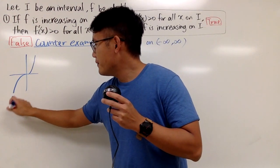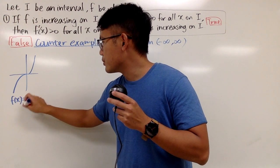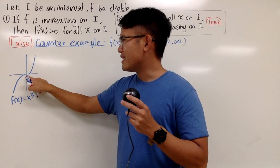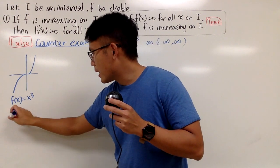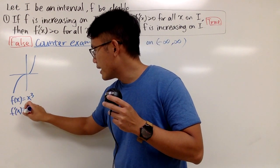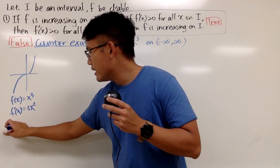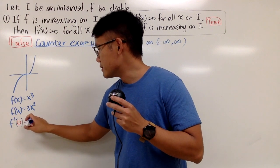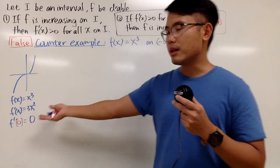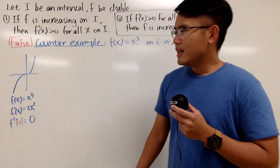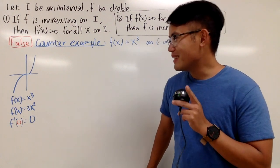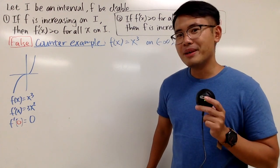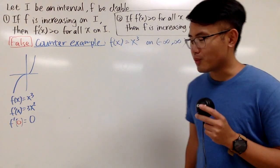We see that f(x) = x³ is always going up, but it seems like it's flat right at the origin. If you compute the derivative, you get 3x². And if you plug in 0, you get 3 times 0 squared, which is just 0. This is actually a pretty debatable — or maybe one of the confusing — parts of Calculus 1: is x cubed increasing at 0 or not?